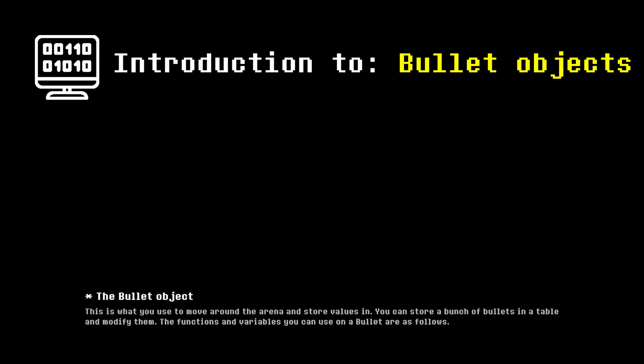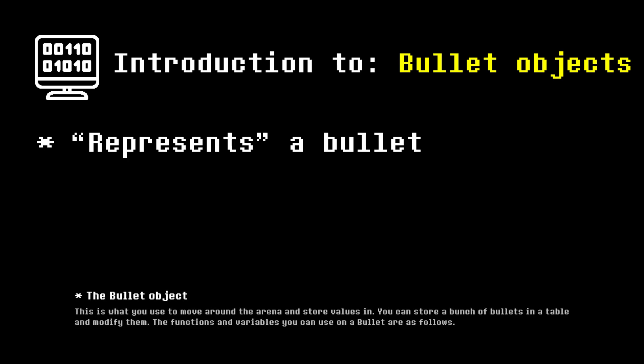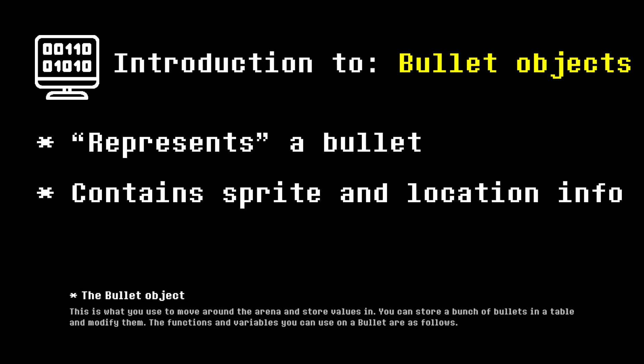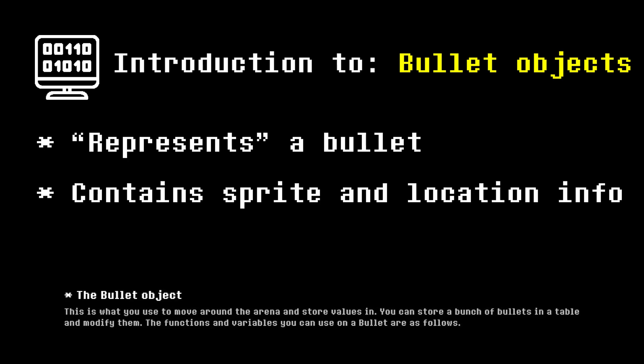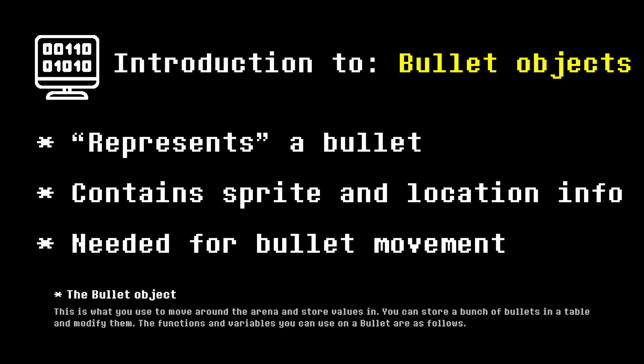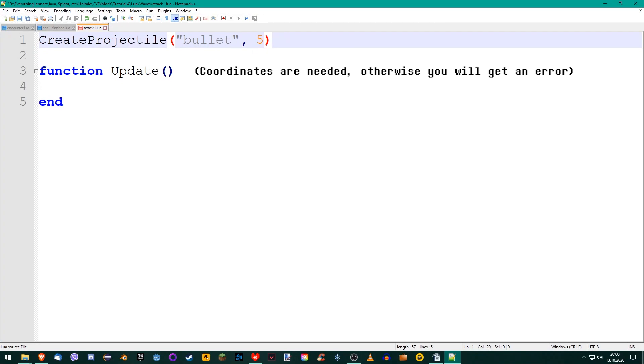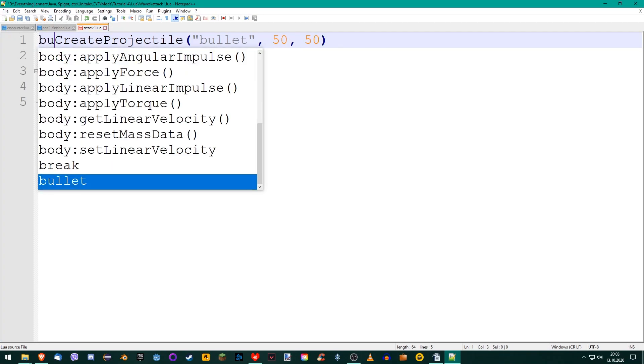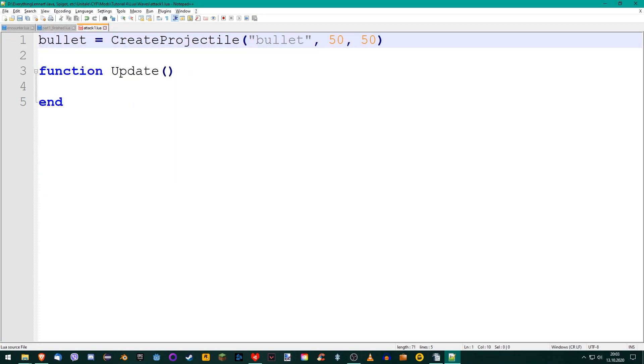Now that we know how to spawn a bullet, the obvious question is how to move bullet. But let's not get ahead of ourselves. We first need to learn about the bullet object. A bullet object represents a spawned bullet and contains all of its information, like its sprite and coordinates. In order to move a bullet, we need this bullet object. To create it, add the name your bullet object should have and an equals sign before the createProjectile function.